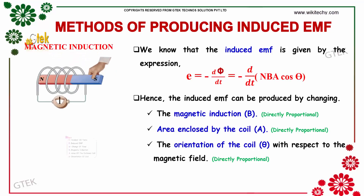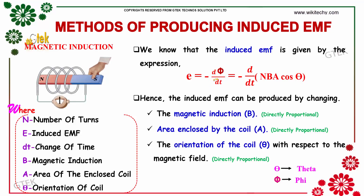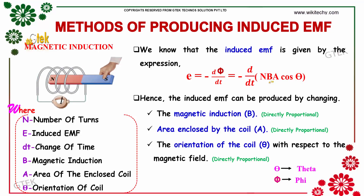The induced EMF can be generated and is equal to the magnetic flux created based on time. So E is equal to minus d-phi by dt, which equals minus d by dt of N·B·A·cos(theta). The induced EMF can be produced by changing the magnetic induction B, the area enclosed by the coil A, and the orientation of the coil with respect to the magnetic field.